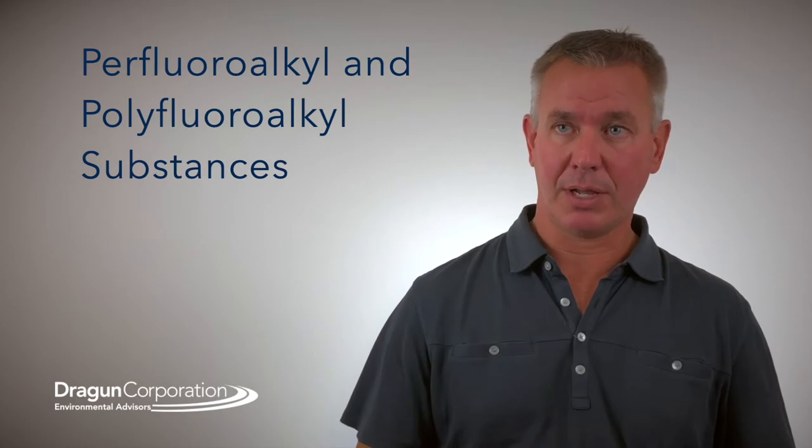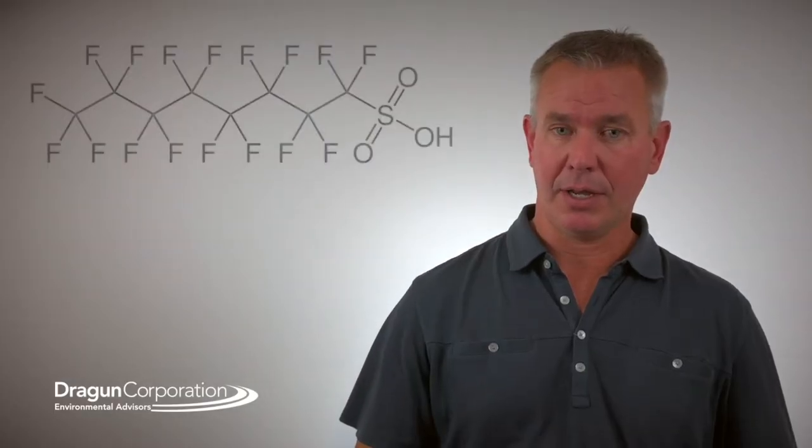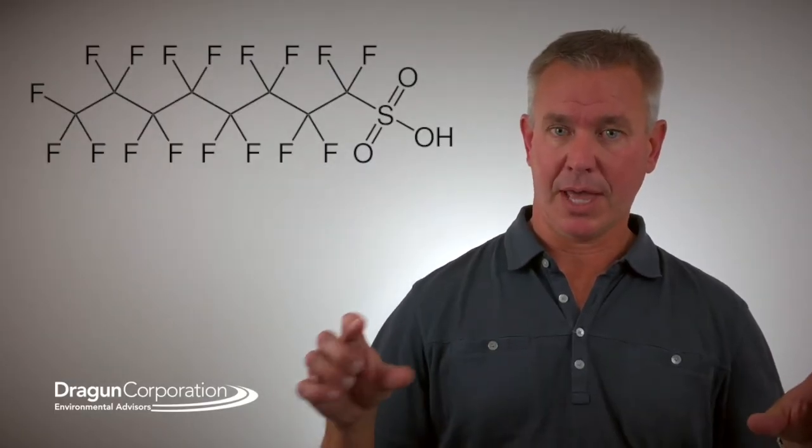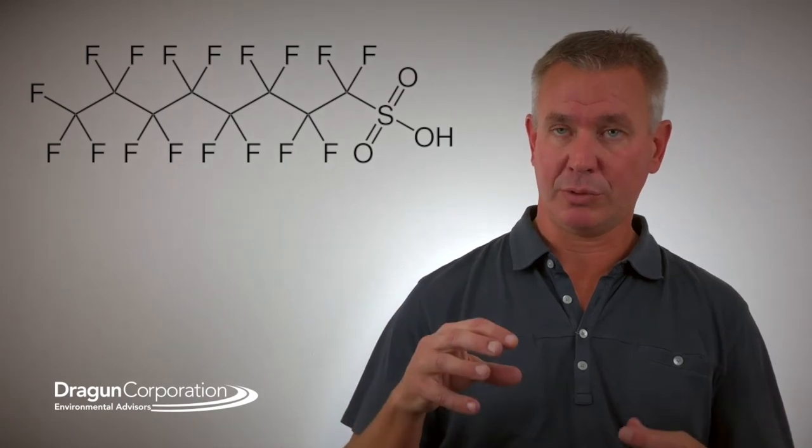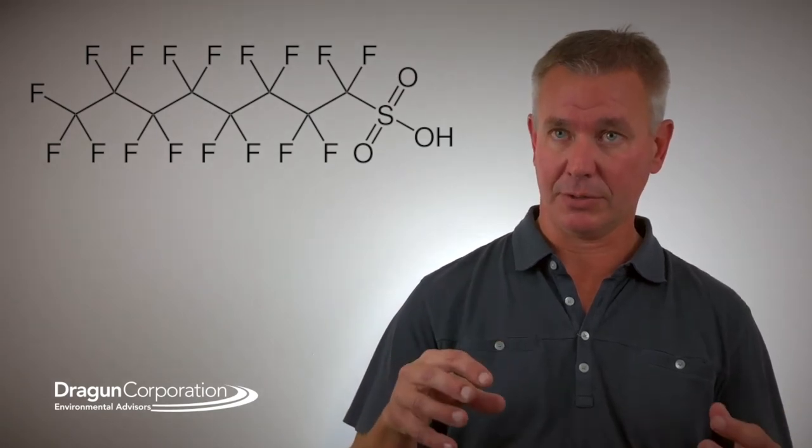PFAS are a class of chemicals. There's about 3,000 of them in total and PFAS stands for per and poly fluorinated alkyl substances. They were developed back in the 1930s and they're defined by a chain of carbons that each of those carbons has multiple fluorine atoms attached to it.